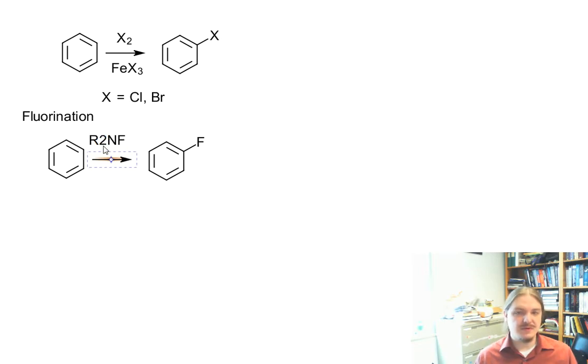Things that are electrophilic fluorine sources are like diamino or dialkylamines or fluoromonium salts. Things that look like this.